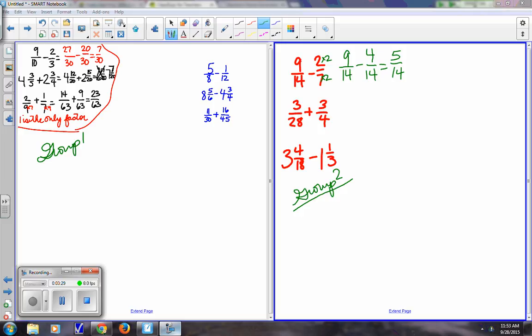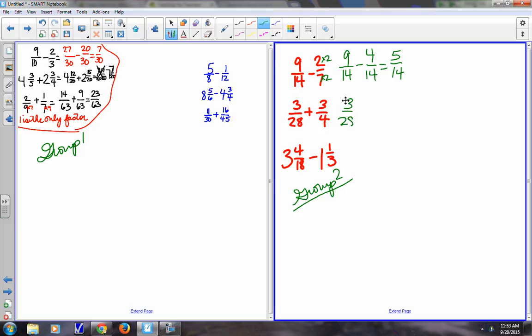On this one, 28 is a multiple of 4. Thumbs up if you agree. So we're going to keep the 3 28ths. We're going to multiply by 7, top and bottom, numerator and denominator, 21 28ths, and we get 24 28ths. But is 24 28ths simplified? No. So I've got to find the biggest factor that will go into both of those. 6 7ths. I'm going to say 4, but I could be wrong.